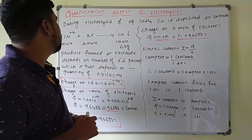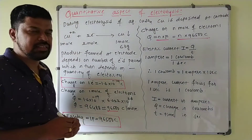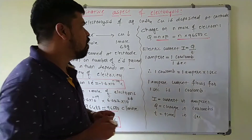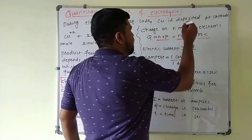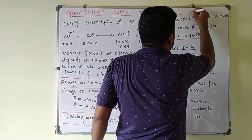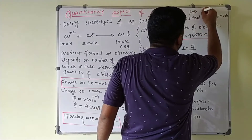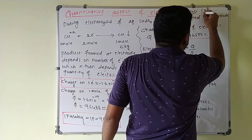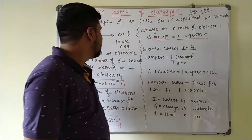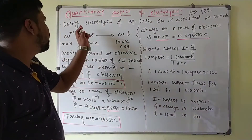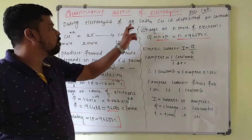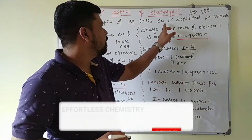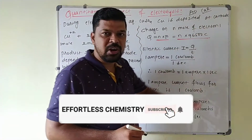Now, the quantitative aspect of electrolysis. We know that during electrolysis, oxidation takes place at the anode and reduction takes place at the cathode — always remember this. During the electrolysis of aqueous copper sulfate solution, copper is deposited at the cathode.